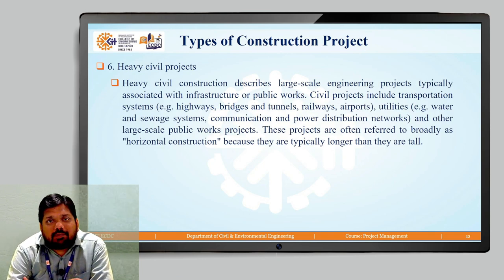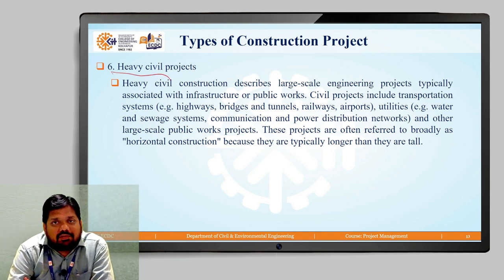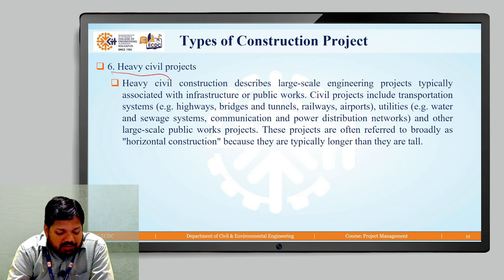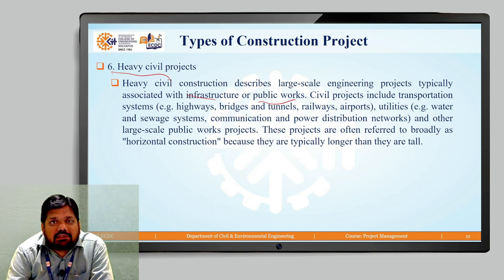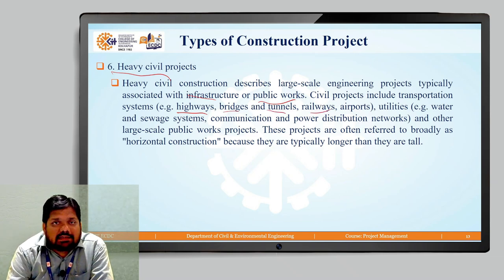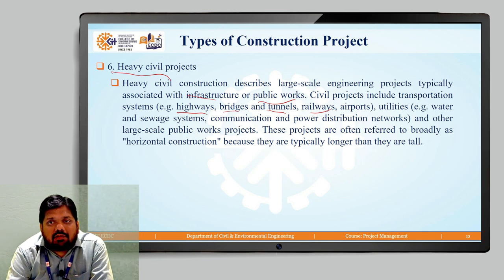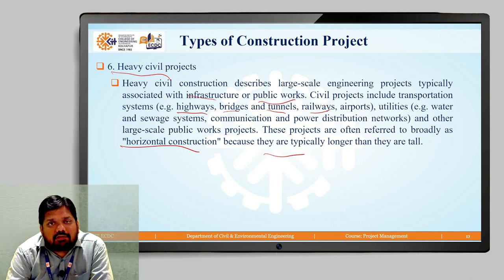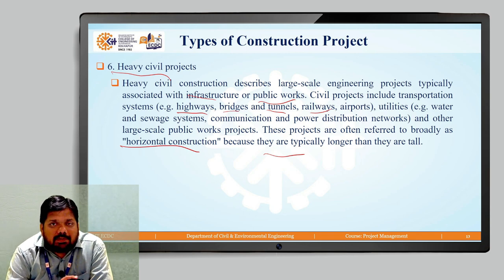The last type is the heavy civil project. These describe large-scale engineering projects typically associated with infrastructure development or public works. Civil projects include transportation systems such as highways, bridges, tunnels, railways, and airports; utilities such as water and sewage systems; communication and power distribution networks; and other large-scale public works. These projects are often referred to as horizontal construction because they are typically longer than they are tall. Generally, more people are affected by these projects, the cost is much higher, and new such projects are not started frequently.